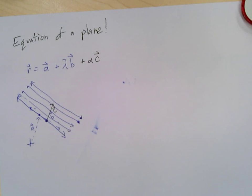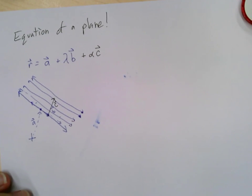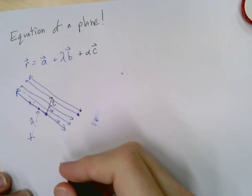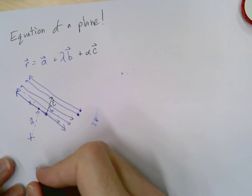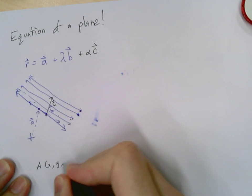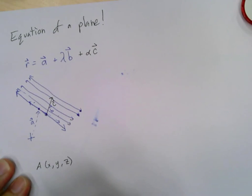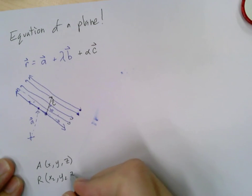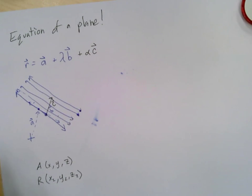All right, so let's try an example. Let's say that I've got a plane that contains a point—so we've got point A, which would then be (x, y, z)—and then I've got point R which has points, let's just say (x₂, y₂, z₂).